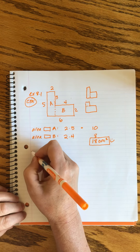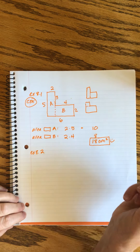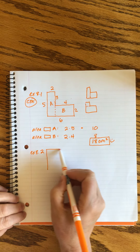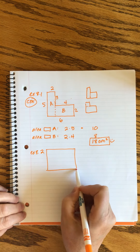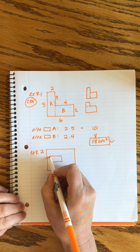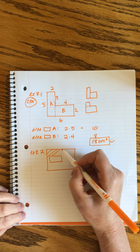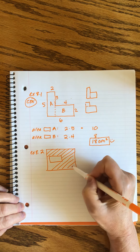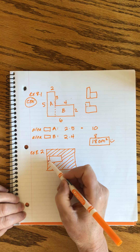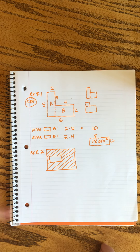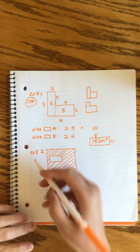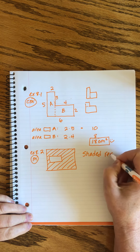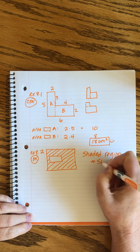How about another one with a twist? Find the area of the shaded portion of this figure. There's a rectangle with a smaller rectangle inside of it, and all the surrounding part is shaded. All angles are right angles — good. Dimensions are in meters. Whenever we have a shaded region, we know there's going to be subtraction.